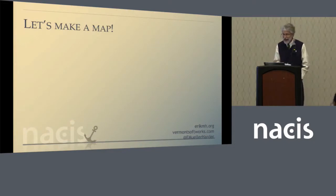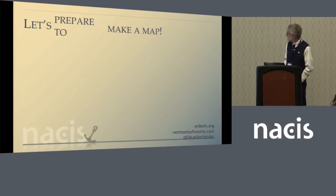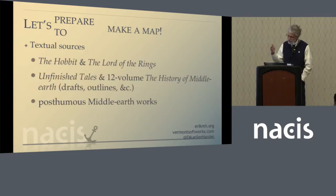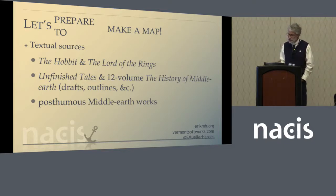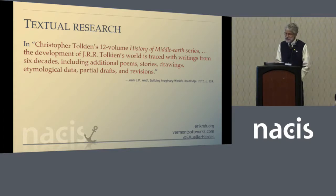Because we want to make a map that does not disagree with the textual sources, we must have a firm command of those sources. The relevant textual sources total pretty close to 10,000 pages of published material. Remember those multilayered waves of drafts? He frequently changed his toponyms, changed the language of his toponyms, or changed his mind about the exact location of geological or political features. And sometimes he then recycled toponyms he'd previously discarded and used them somewhere else.